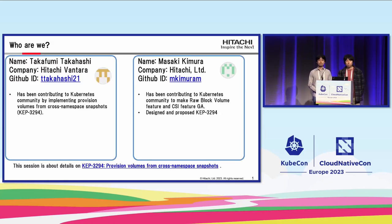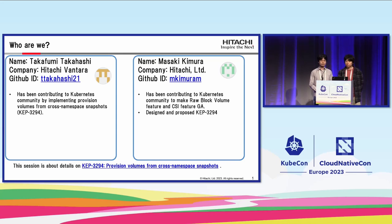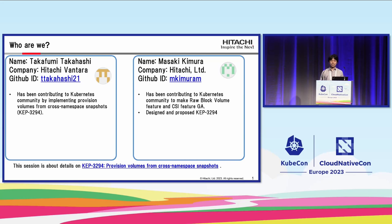Let me introduce myself first. My name is Takafumi Takahashi. I work for Hitachi Vantara. I have been contributing to the Kubernetes community by implementing provisioning volumes from cross-namespace snapshots. My name is Masaki Kimura. I work for Hitachi. I have been contributing to the Kubernetes community to make the reference grant boundary feature and CSI feature GA.